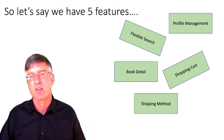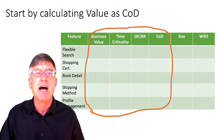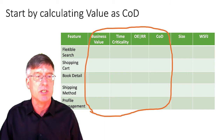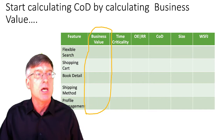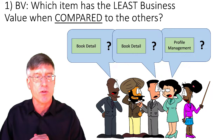So let's say we have five features and we're asked which one should we do first. We start by calculating the value of each feature as cost of delay. And you remember from our previous video, cost of delay has three components: business value, time criticality, and opportunity enablement or risk reduction. Here now are our five features listed out in this table. We start calculating cost of delay by calculating one column at a time — in this case, business value. We just focus on that for the moment.